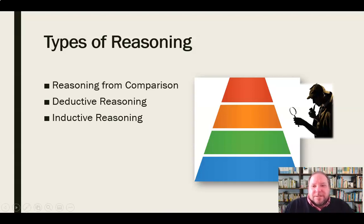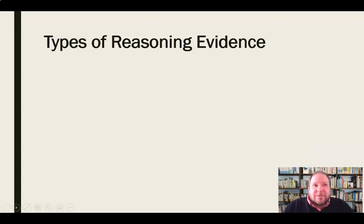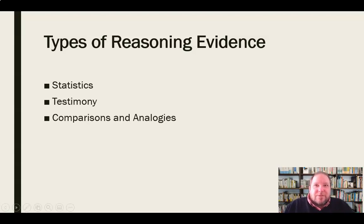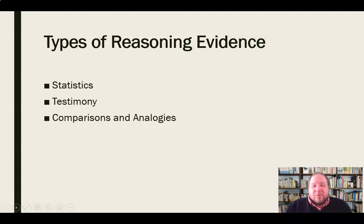There's no shortage of types of reasoning that we can use. There are also different types of reasoning evidence — different ways that we make connections between reason and evidence, things like statistics, testimony, comparisons, and analogies. All of these are ways that we support our reasoning and connect it to the evidence and demonstrate the relationship between the two. We can't just have either reasoning or evidence existing separately — we need reasoning and evidence that are connected, and we need to demonstrate that relationship between the two of them.